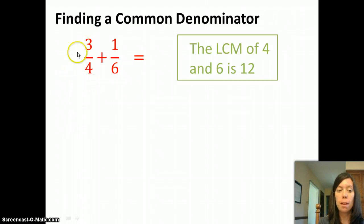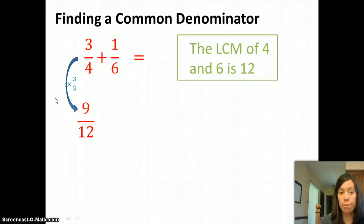So I'm going to multiply this whole fraction by 3, the numerator and the denominator. When I multiply by 3, I get 9/12. Multiply the numerator by 3 and the denominator by 3.